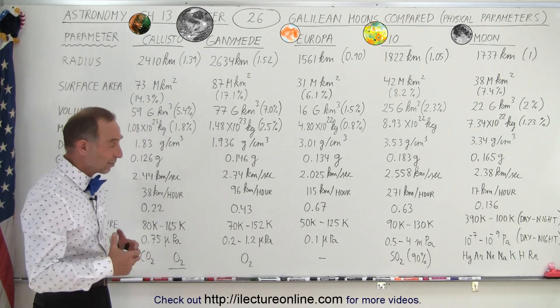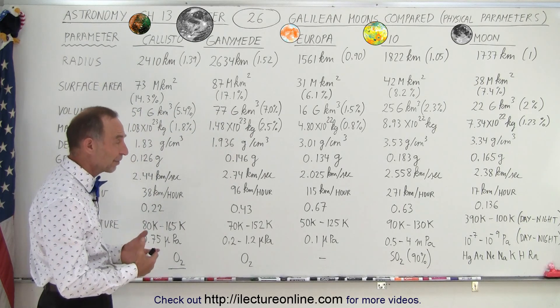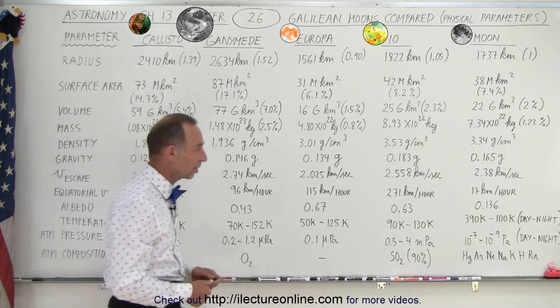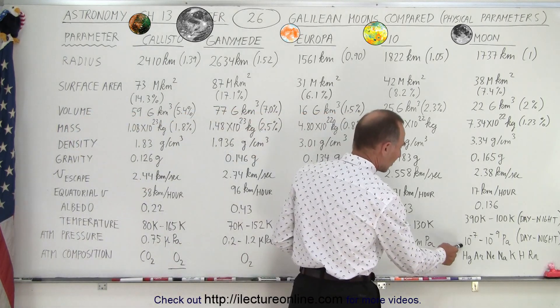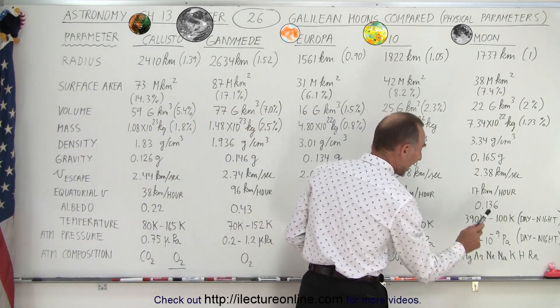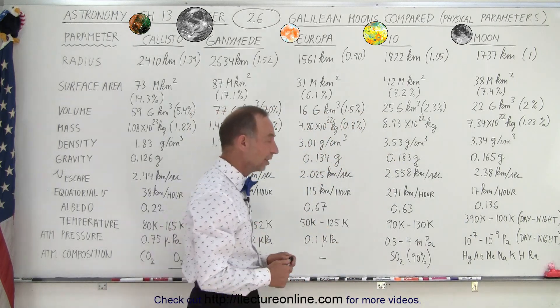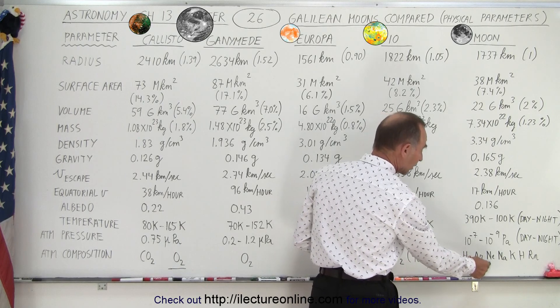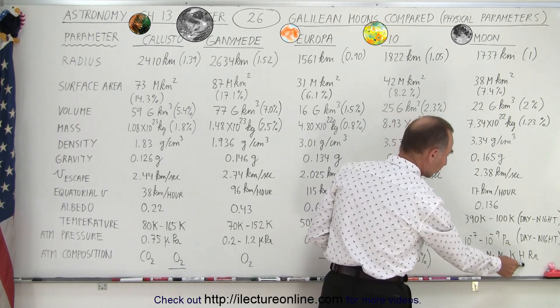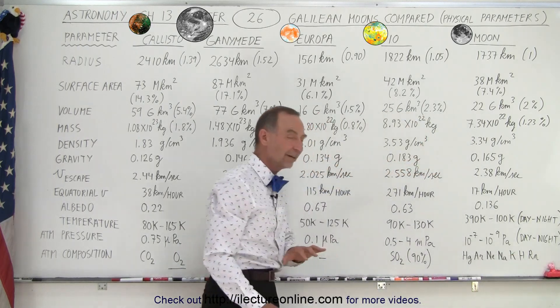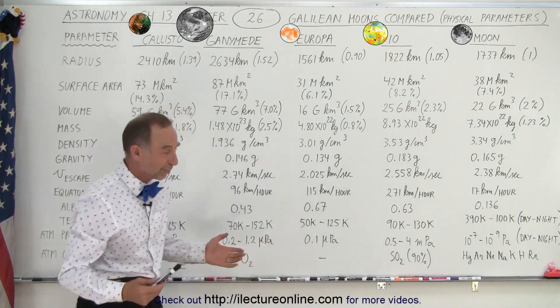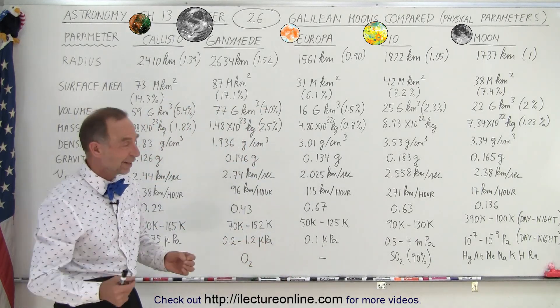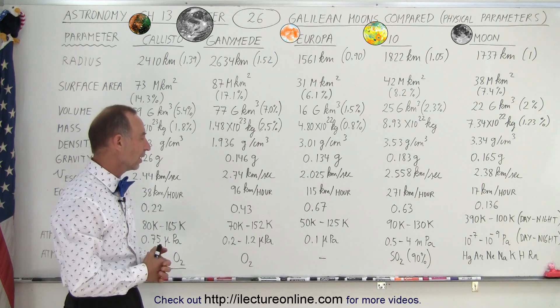Then we have a couple more things. Atmospheric pressure. There's not really much of an atmosphere on any of the moons, especially on our moon. Notice from 10 to the minus 7 to 10 to the minus 9 Pascal. So it's a very, very low pressure. We do find mercury, argon, neon, sodium, potassium, hydrogen, and radon gas near the surface of the moon. But in such small quantities, you really cannot call it an atmosphere.